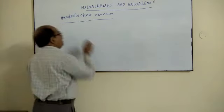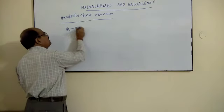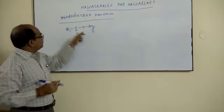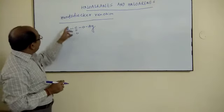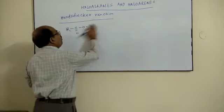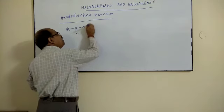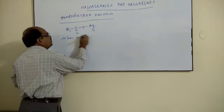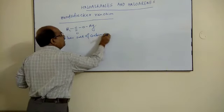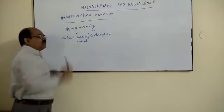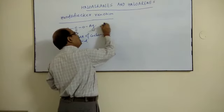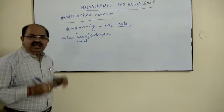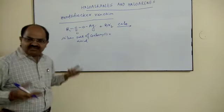So what happens when silver salt of carboxylic acid - see this is your silver salt of carboxylic acid, that is RCOOAg. You know, the carboxylic acid is RCOOH, and if we replace this hydrogen atom by silver, then this is your silver salt of carboxylic acid. So when this silver salt of carboxylic acid reacts with bromine, Br2, in the presence of a less polar solvent such as carbon tetrachloride.